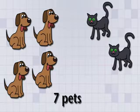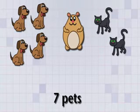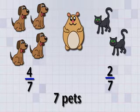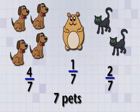Let's say you have seven pets. Four dogs, two cats, and a big fat hamster. Well, that means that four over seven, or four-sevenths of your pets are dogs, and two over seven, or two-sevenths of your pets are cats, and one over seven, or one-seventh of your pets are hamsters. It also means that your house probably smells like a pet store.